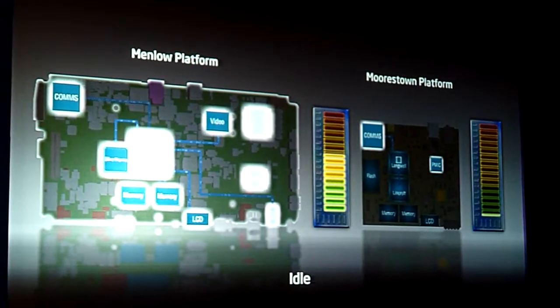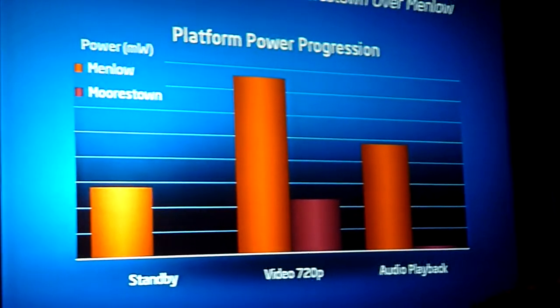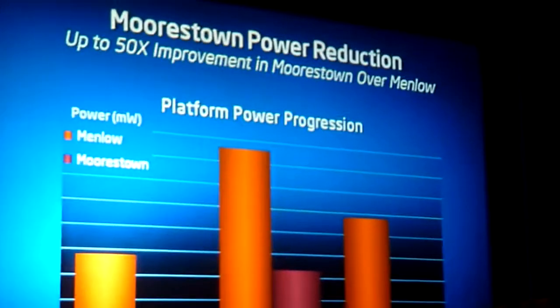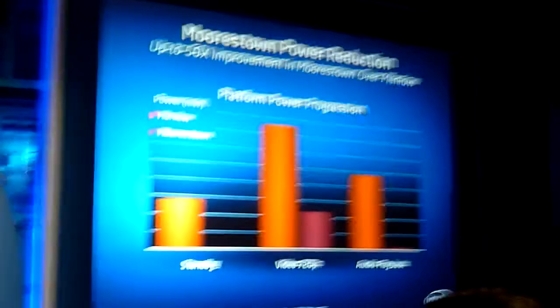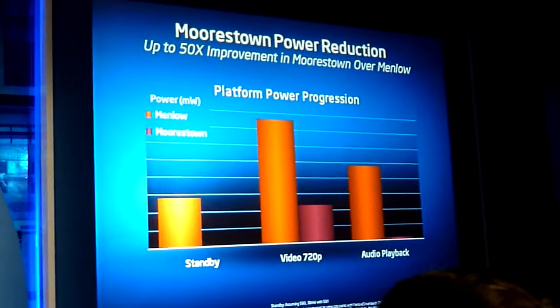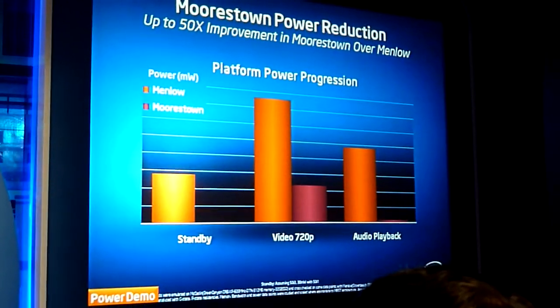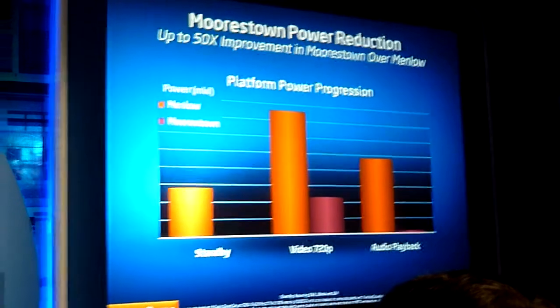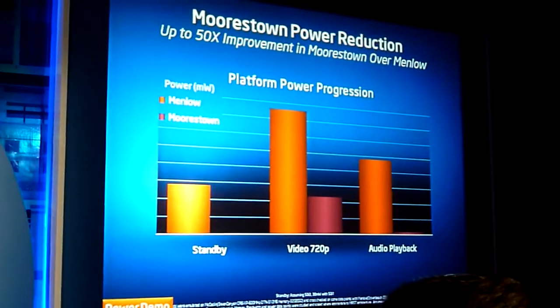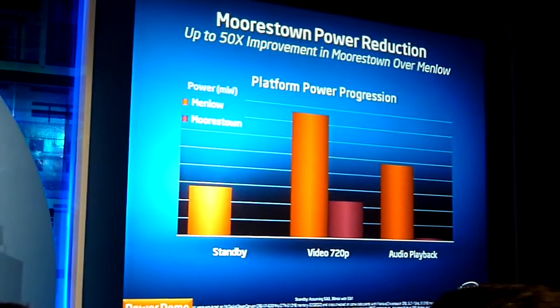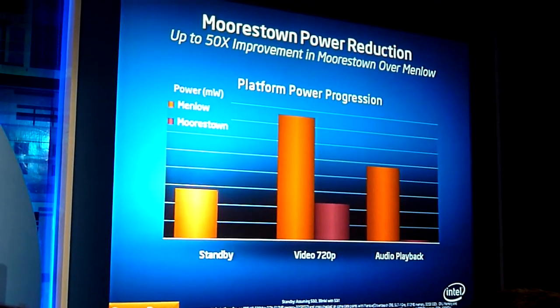If we take this data and plot it on a graph, this is what you would expect to see. I'm showing you the standby power on Memo versus Morstan, the video playback — I've substituted video instead of internet, showing 720p high-def video — and audio playback. I'm not showing the exact numbers because we're not going public with those, but we are showing you the scale of change so you can get a feel for the capability that the Morstan platform brings.